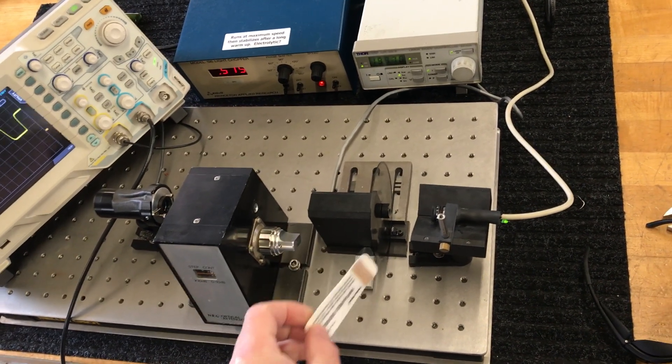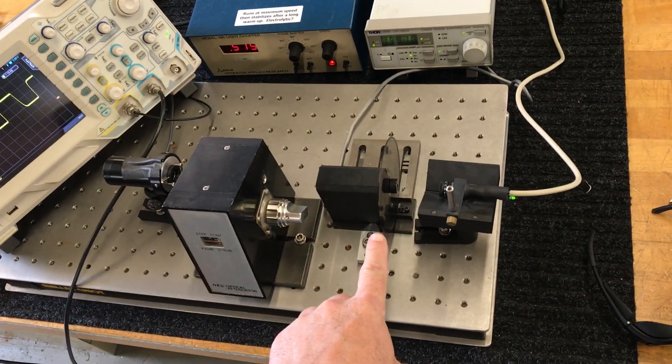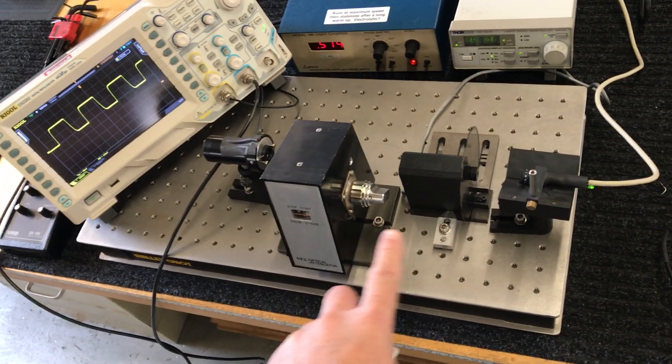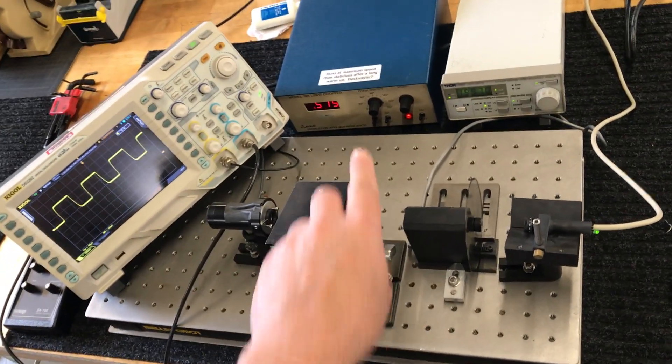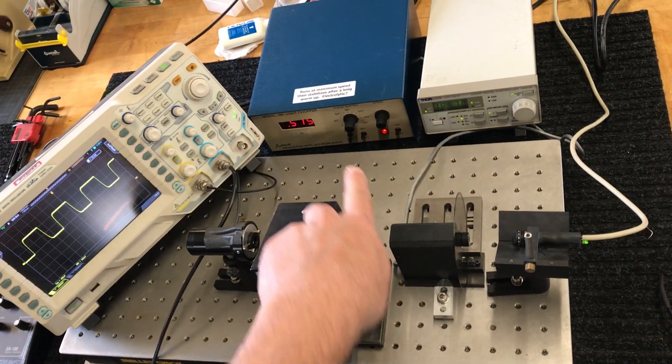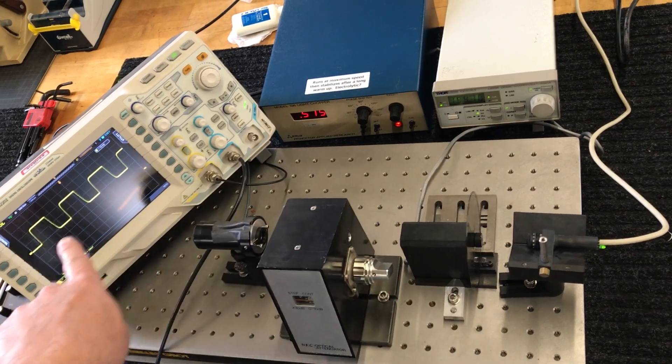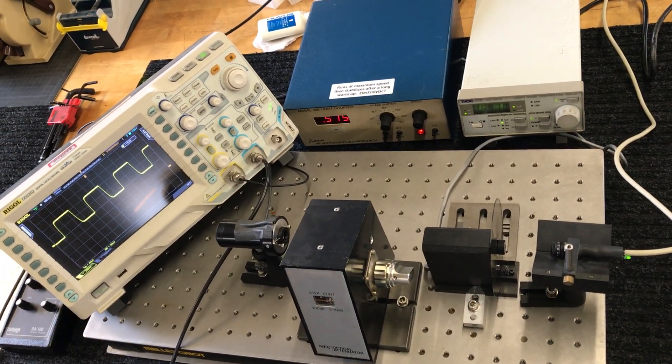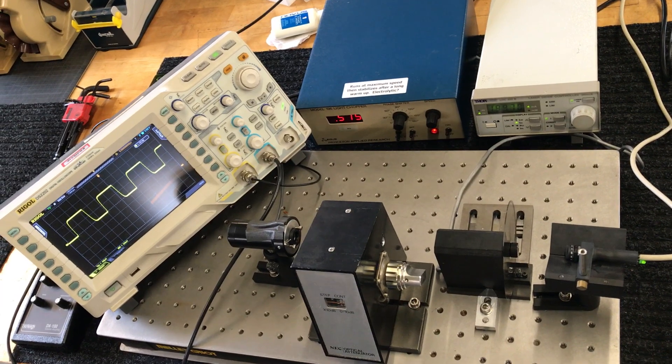Light is going through this chopping wheel, so I'm chopping the laser. The chopper is controlled by this box back here and it's phase-locked to the oscilloscope sweep, so that's why the square wave is standing still there.